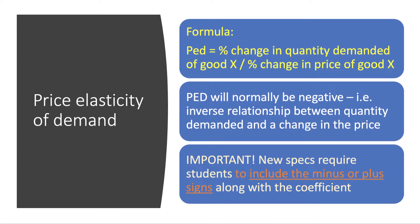There are three elasticities of demand to focus on, and I'll emphasize some very key exam points — quite important changes to the exam specifications and what examiners will expect from you. First of all, price elasticity of demand, PED. The formula is the percentage change in quantity demanded of good X divided by the percentage change in the price of good X. Normally PED will be negative — there's an inverse relationship between quantity demanded and price. However, key new specifications require students to include the minus or plus signs along with the coefficient.